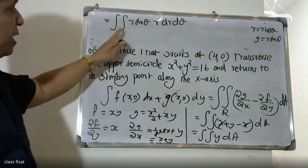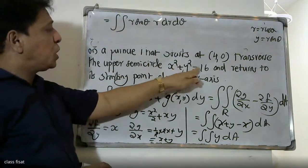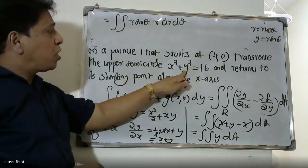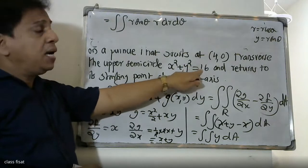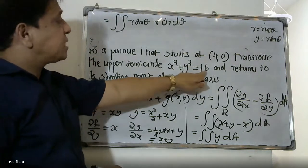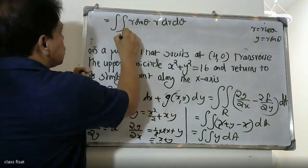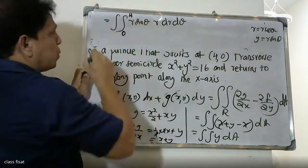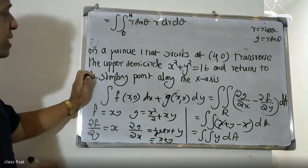The region is the upper semicircle where x² + y² = 16, so the radius is 4. For polar coordinates, r goes from 0 to 4 (lower limit 0, upper limit 4), and theta goes from 0 to π since this is a semicircle.